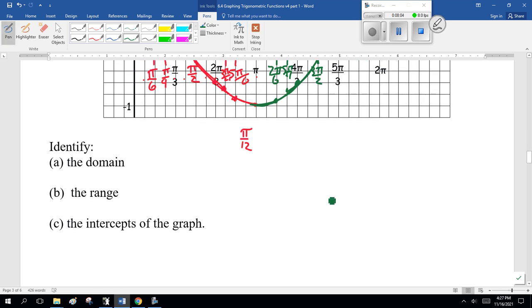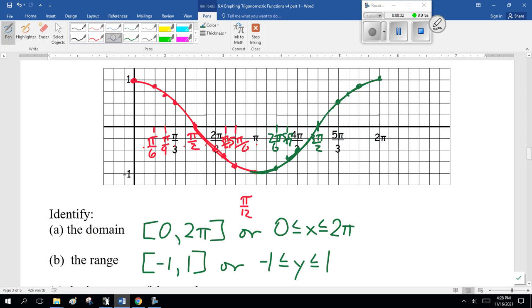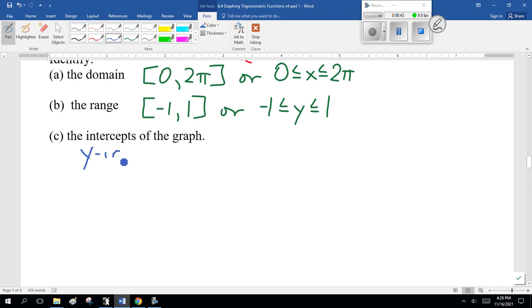So here, the domain: 0 to 2 pi, or 0 is less than or equal to x is less than or equal to 2 pi. The range: minus 1 to 1, or minus 1 is less than or equal to y is less than or equal to 1. So far, so good.